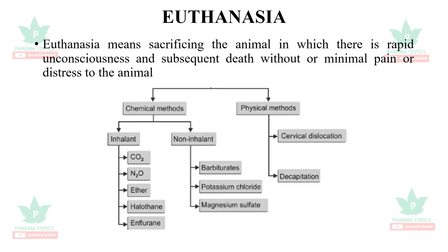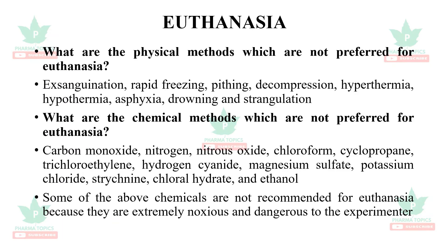Chemical methods involve inhalants such as carbon dioxide, nitrous oxide, ether, halothane, and isoflurane, and non-irritant injectables including barbiturates, potassium chloride, and magnesium sulfate. Allowed physical methods are cervical dislocation and decapitation. Physical methods not preferred include exsanguination, rapid freezing, pitting, decompression, hyperthermia, hypothermia, asphyxia, drowning, and strangulation. Chemical methods not preferred include carbon monoxide, nitrogen, chloroform, cyclopropane, hydrogen cyanide, strychnine, chloral hydrate, and ethanol — many are not recommended as they are extremely noxious and dangerous to the experimenter.